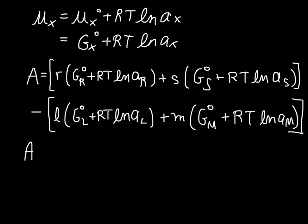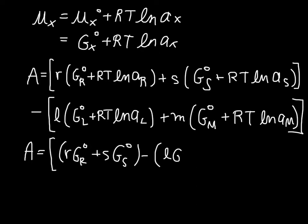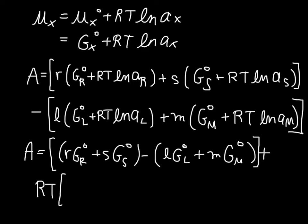Let's do a little bit of rearranging here. We're going to first pull out all of the first terms, so we end up with r·G_R plus s·G_S minus l·G_L plus m·G_M. Then plus RT times all of our second terms: r·ln(A_R) plus s·ln(A_S), minus the corresponding reactant log-activity terms.